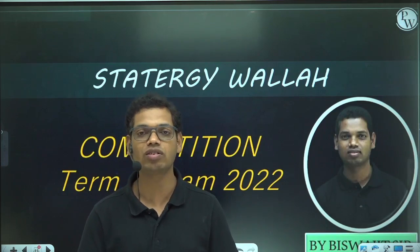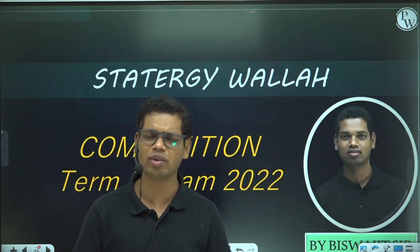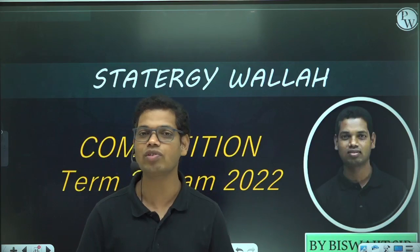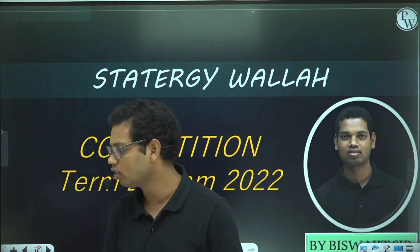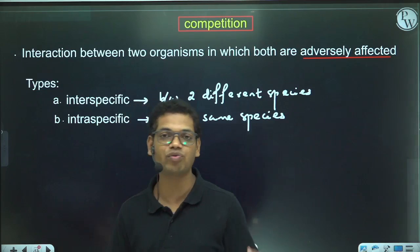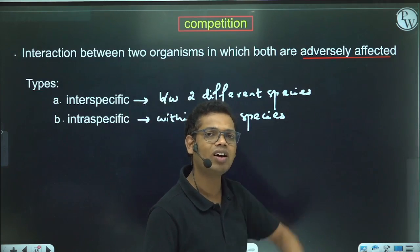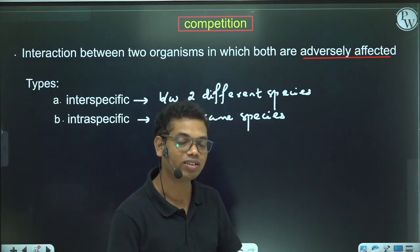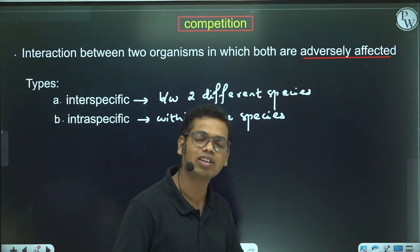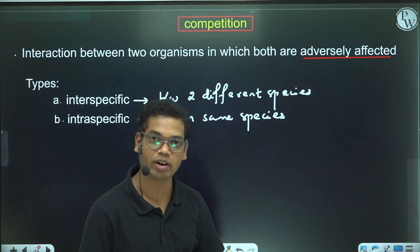Everybody knows this very well that no organism on this planet can exist isolated. Every organism has to interact with some other organisms, and one of the examples of population interaction is competition. In competition, the two organisms which are interacting with each other are adversely affected — both of them will be harmed. Because both partners are harmed or adversely affected, we call this a minus-minus type of interaction.